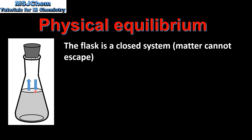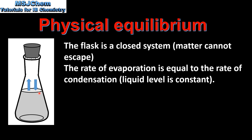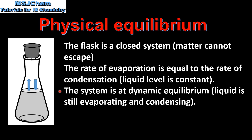There are two physical processes occurring in the flask: evaporation and condensation. Once the liquid level remains constant, the rate of evaporation is equal to the rate of condensation. The system is at dynamic equilibrium.